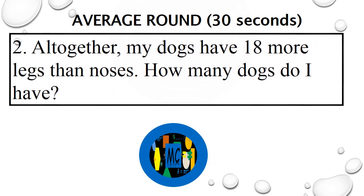Question 2. Altogether, my dogs have 18 more legs than noses. How many dogs do I have? Question 2. Altogether, my dogs have 18 more legs than noses. How many dogs do I have? Go!